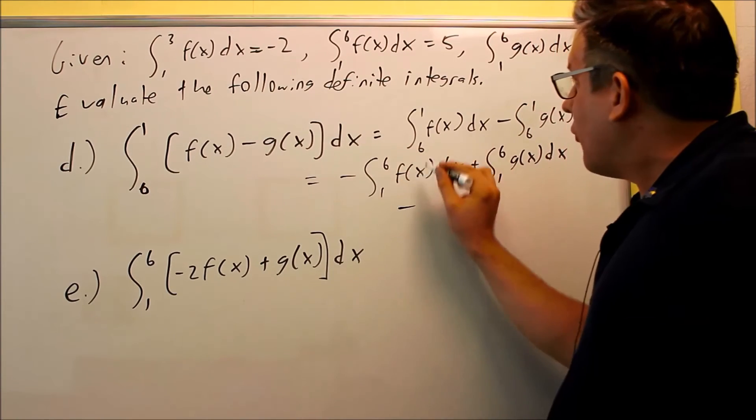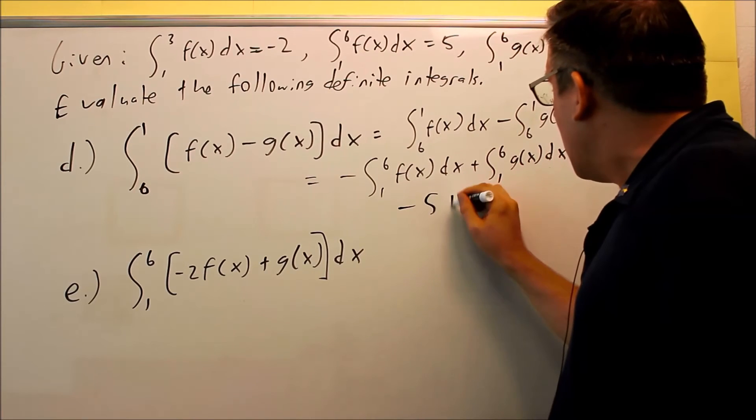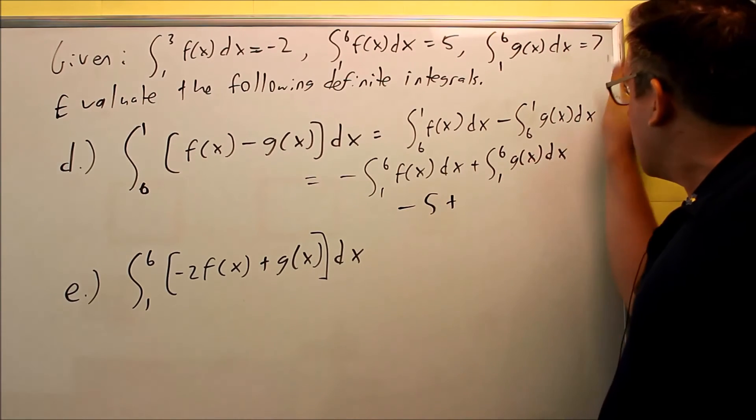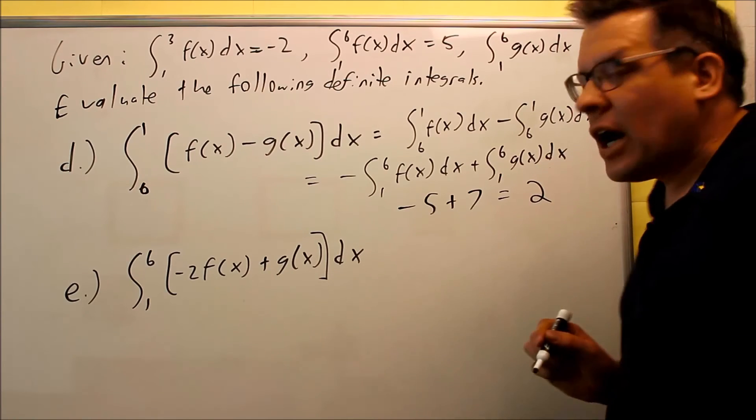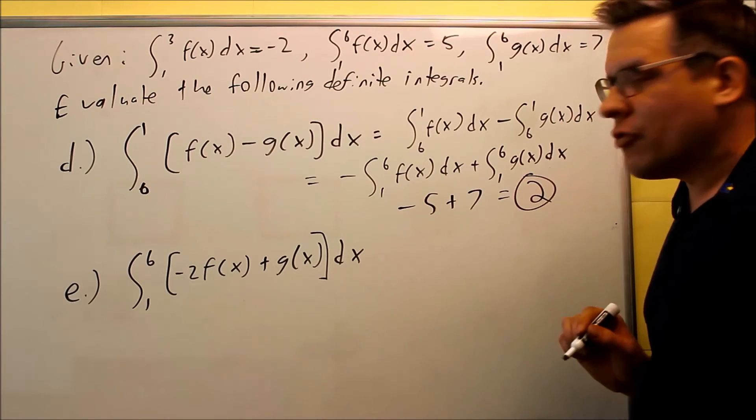And now it's just a matter of plugging in the numbers for each one. I have a negative, this f of x there, that's five. And I have plus this one right here, adding seven to it, so I get positive two as the answer for part d.